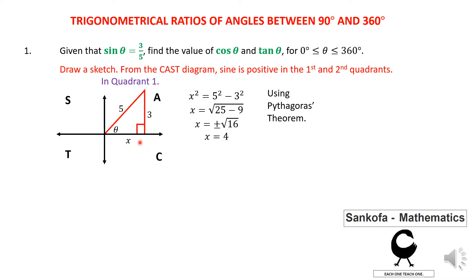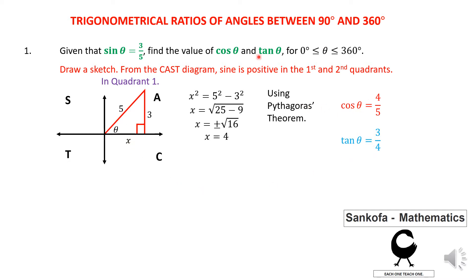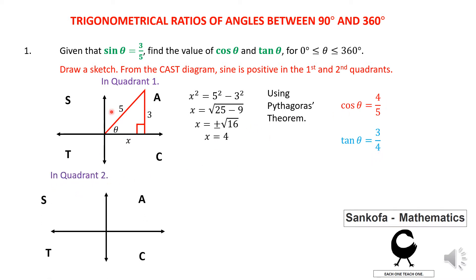Now that I know x equals 4, cos theta in the first quadrant is 4 over 5 — adjacent over hypotenuse. And tan theta is opposite over adjacent, which is 3 over 4. In the second quadrant, the sine ratio is also positive. So I bring in a triangle there too.